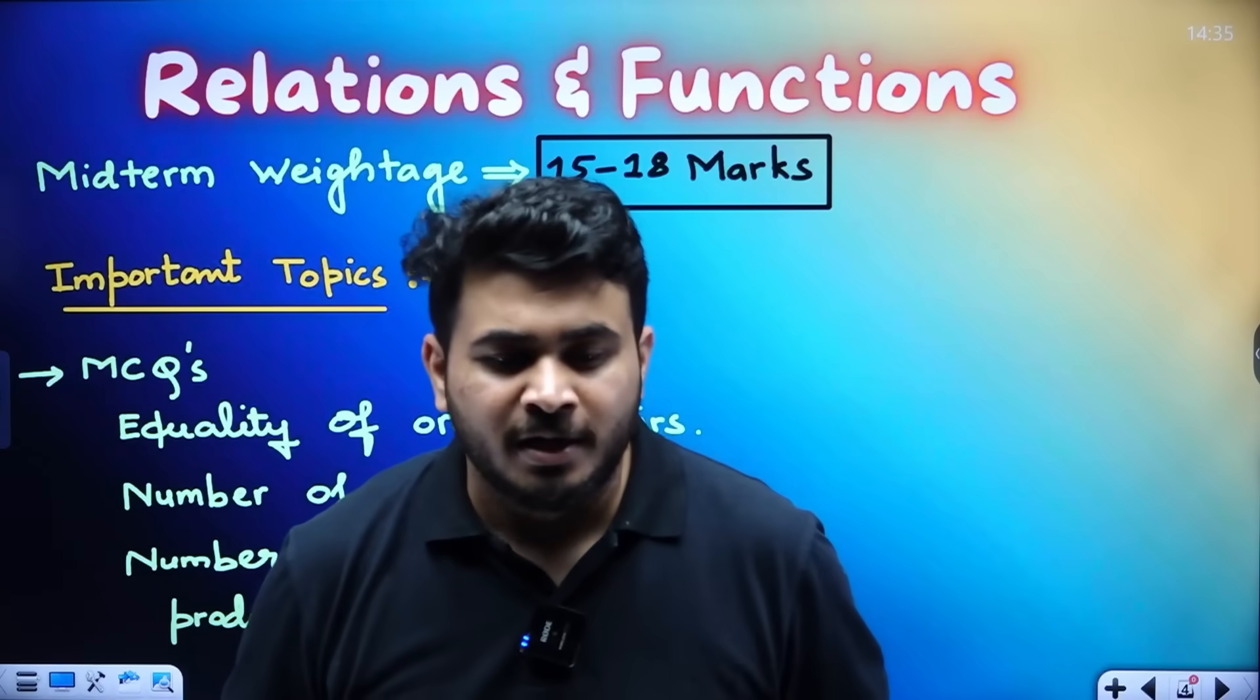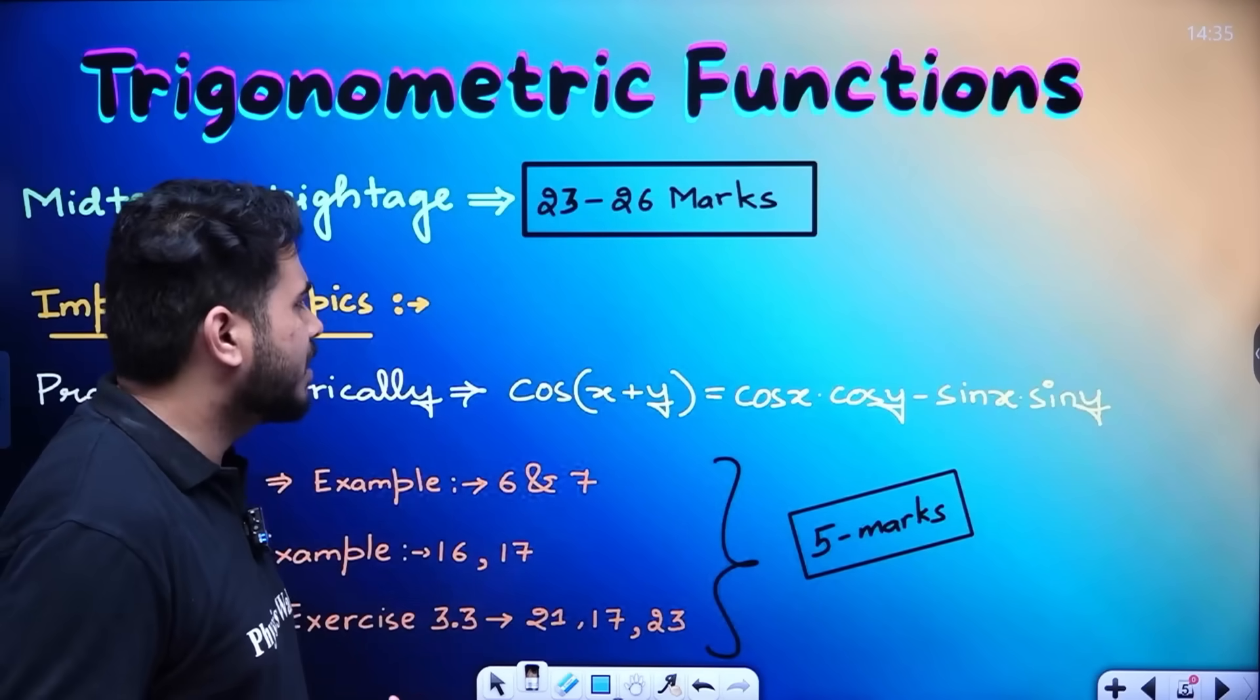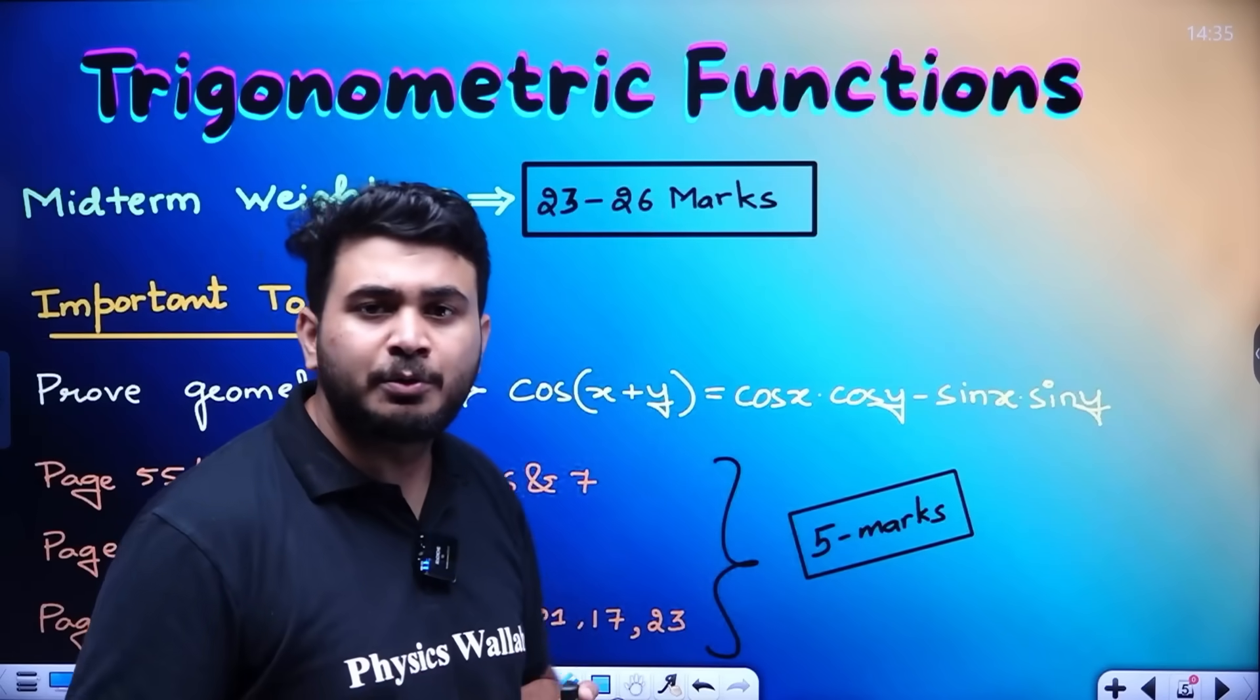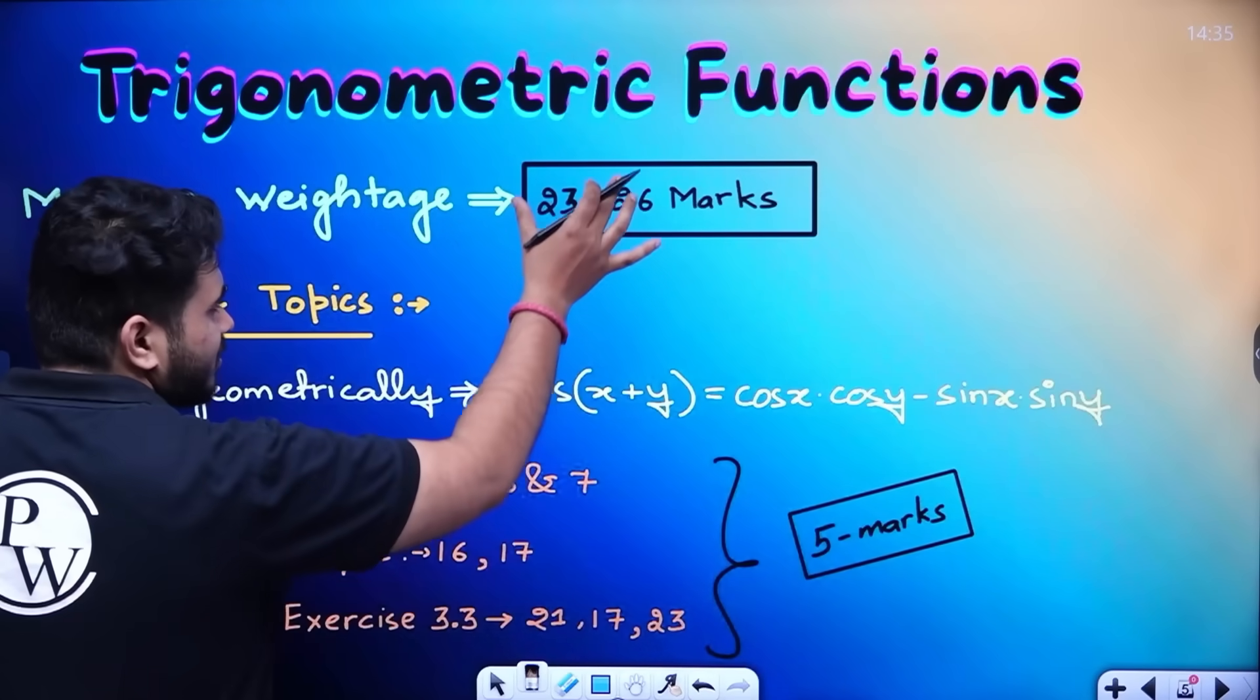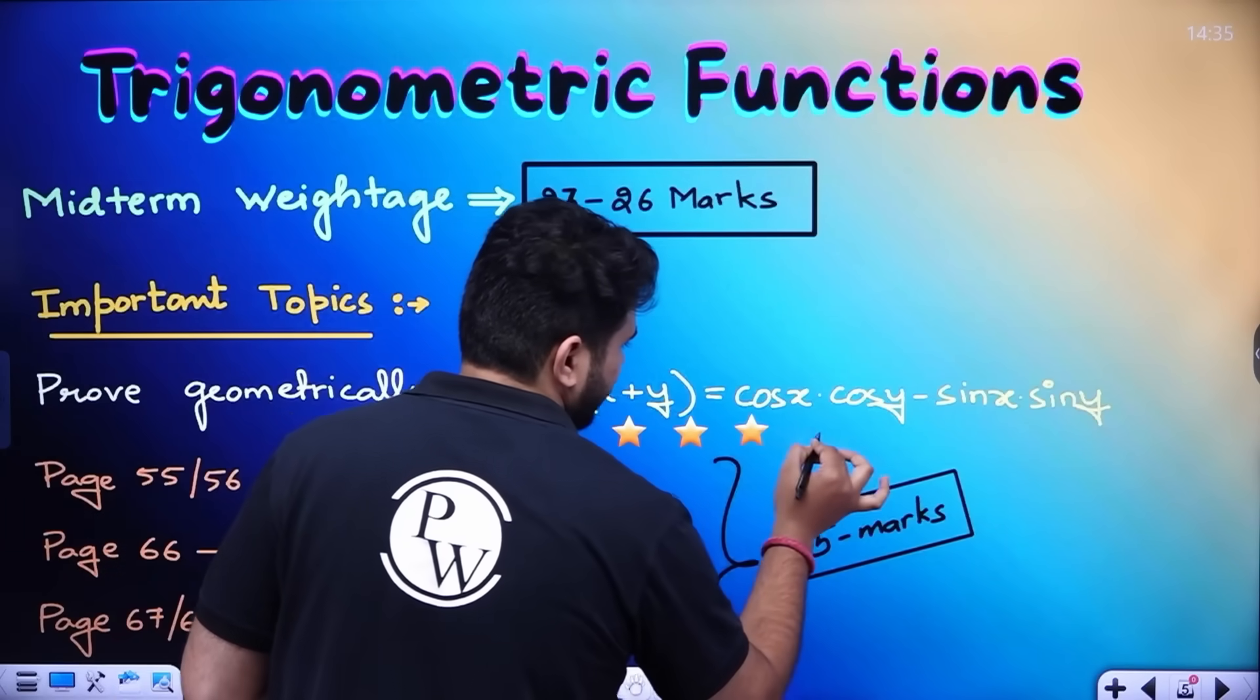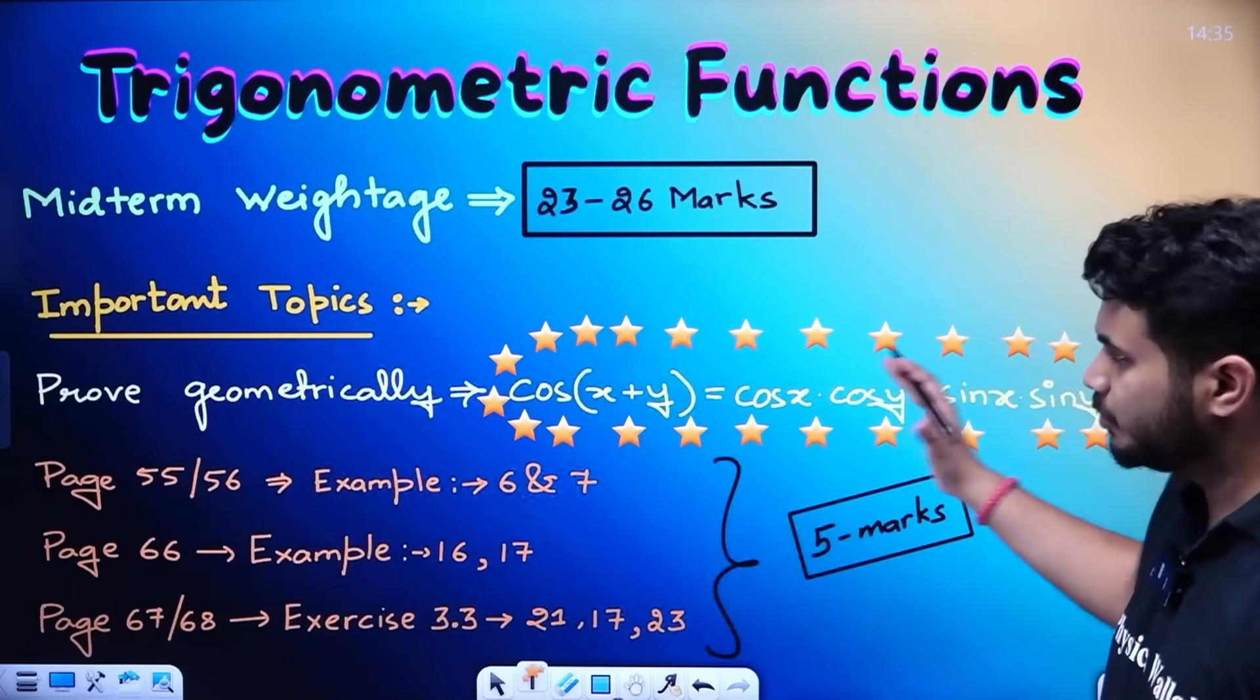So, this is the important questions I have given to you people and then MCQs I have told. Now, next one bit to your high weightage topic. The most important and high weightage topic is trigonometric functions. So, trigonometric functions, midterm weightage is 23 to 26 marks. Sir, passing marks are a little bit. So, this topic is not possible. Passing is a little bit. From your students in midterm weightage, 23 to 26 marks for this important topic. Prove geometrically. 100% sure shot question, students. It will come. 6 marks. Without fail, this question will be there in your exam. 100% it will be there. Geometrically, cos x plus y is equals to cos x cos y minus sin x sin y.